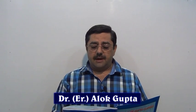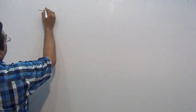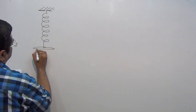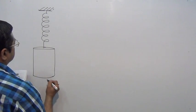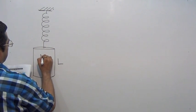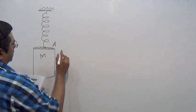A uniform cylinder of length L and mass M having cross sectional area A is suspended with its length vertical from a fixed point by a massless spring. One spring is there and from this spring one cylinder is suspended like this. Length of the cylinder is L, mass of the cylinder is M.